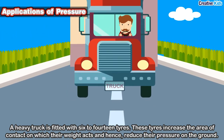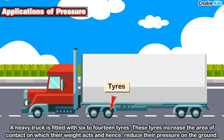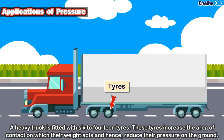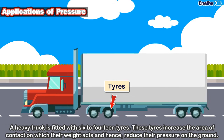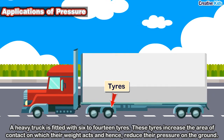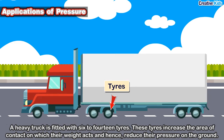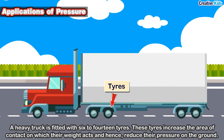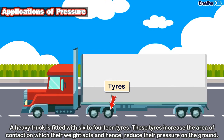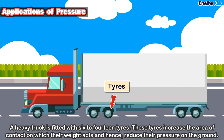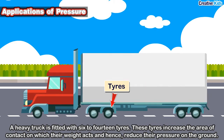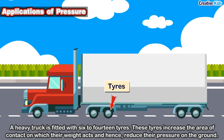Applications of pressure: A heavy truck is fitted with 6 to 14 tires — why? These tires increase the area of contact on which their weight acts. Because of the increase in area of contact, the pressure of the heavy truck on the ground decreases. So these tires increase the area of contact, reducing pressure on the ground, and as a result the heavy truck does not sink into the road.